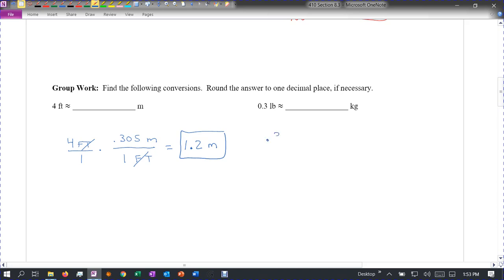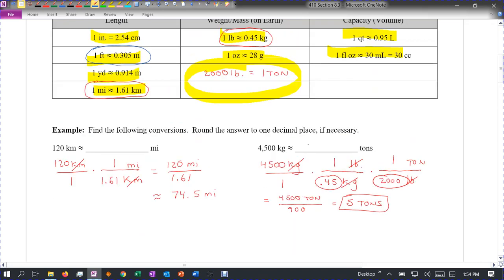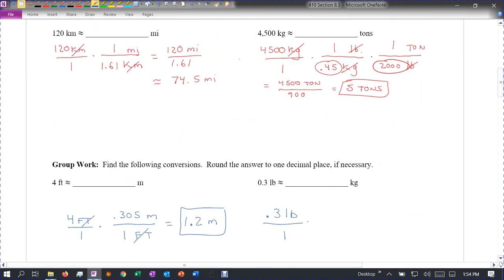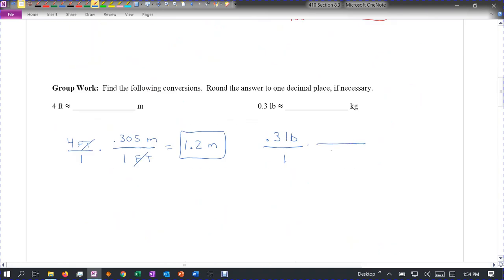Let's go .3 pounds. We're going to try and go to kilograms. So let's see what we've got up here. We've got pounds to kilograms right there. So 1 pound is .45 kilograms. We're going to put pounds on the bottom. 1 pound is .45 kilograms. And we cancel the pounds. So we're multiplying .3 times .45 on our calculator. And we get .135 kilograms. But they want us to round to the nearest one decimal place. So .1 kilograms.